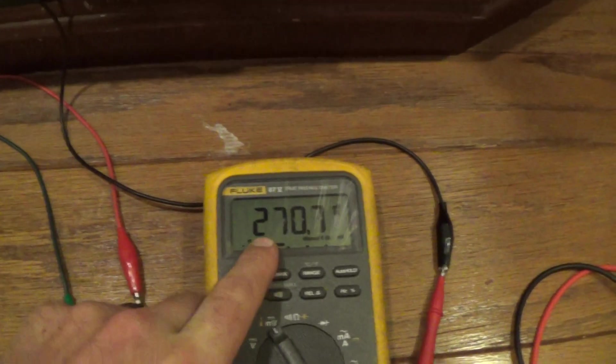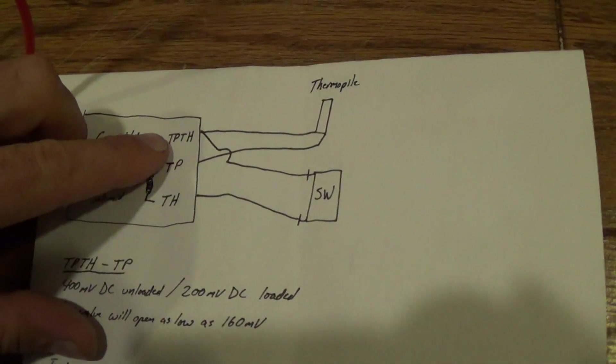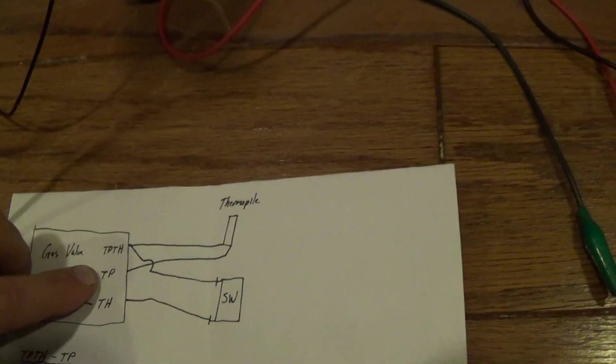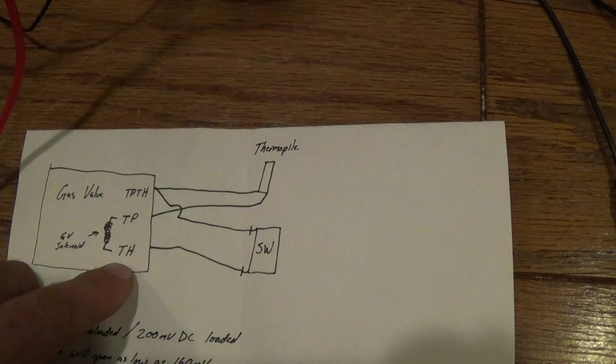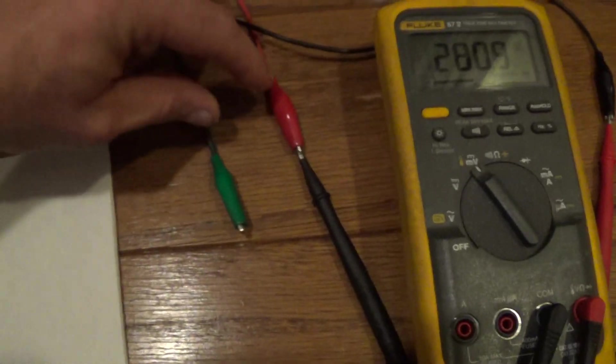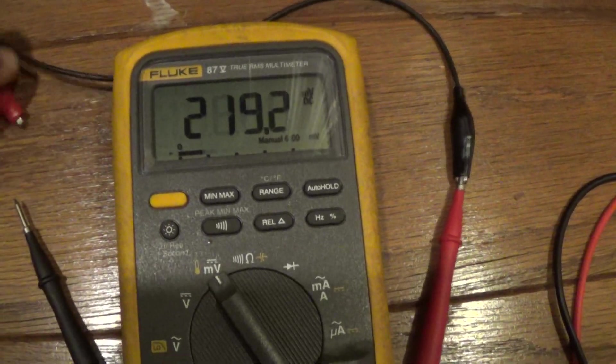This is only what I'm measuring—TP, TH, TP. I'm not looking at the voltage drop in the switch. Now I'm going to switch over to measuring TP and TH. I'm at 280 right now.